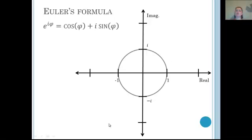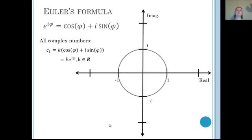Now that we understand the complex unit circle, we'll discuss how to write every complex number using Euler's formula. I claim that all complex numbers can be written in the form of some scalar k multiplied by Euler's formula — that is, as a scalar multiple of some point on the complex unit circle. Multiplying a unit circle point by some k gives us every complex number.